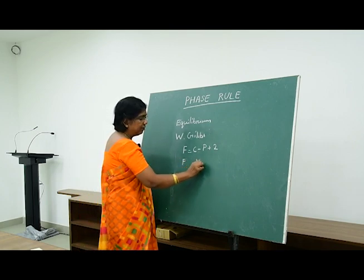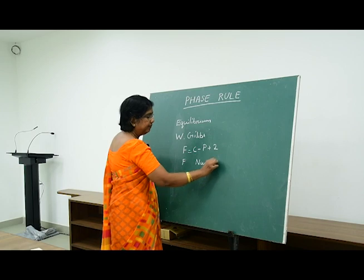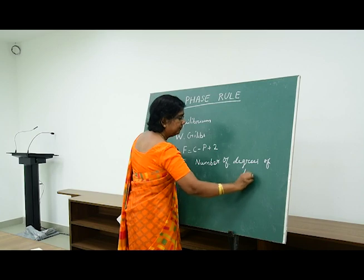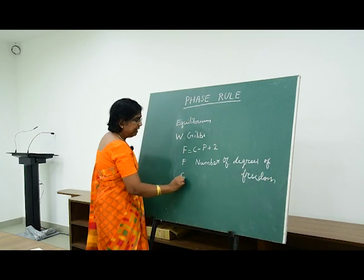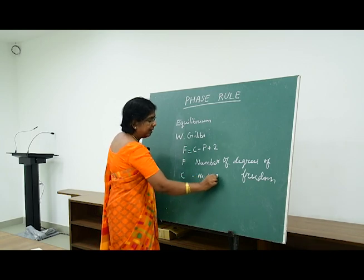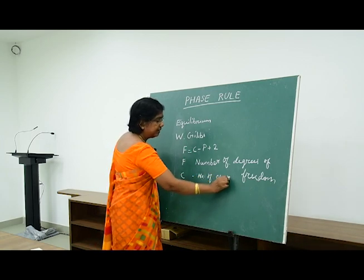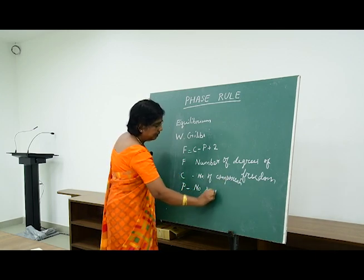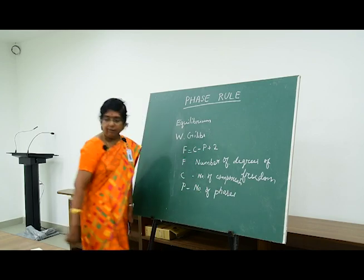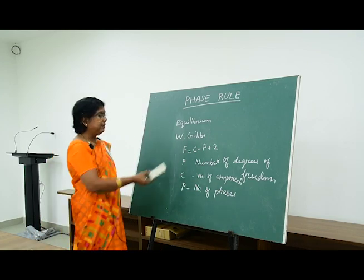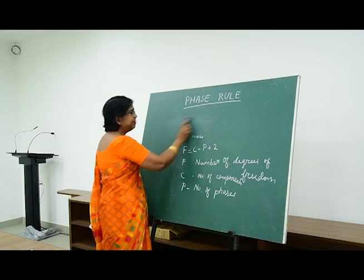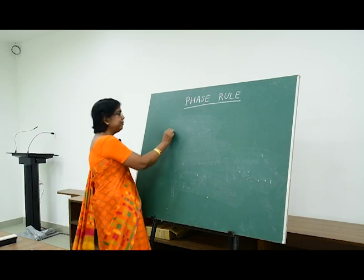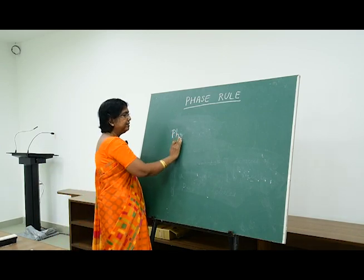F represents the number of degrees of freedom. C represents the number of components and P represents the number of phases. Let me tell you about these terms individually. A phase — what is meant by a phase? A phase is a homogeneous and physically distinct part of a system.